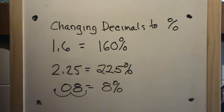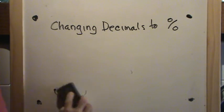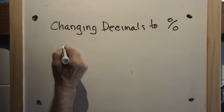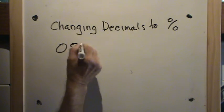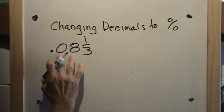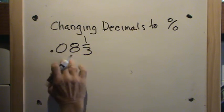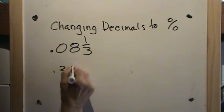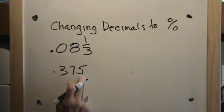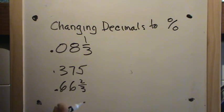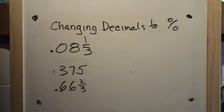Let's try a few more problems. We'll put up eight and one-third hundredths as the decimal fraction, three hundred and seventy-five thousandths, and sixty-six and two-thirds hundredths. Put your video on pause, work these problems in your notebook, then turn it back on and we'll take a look at how you did.